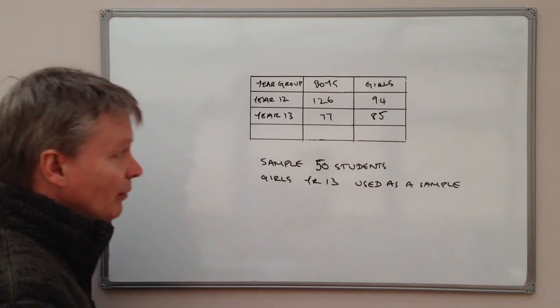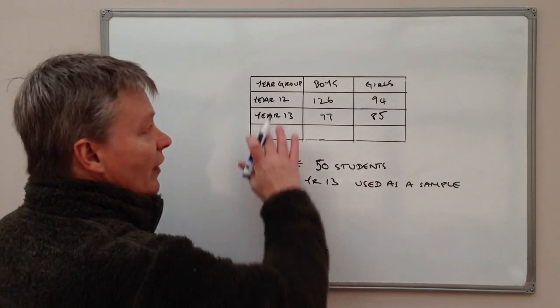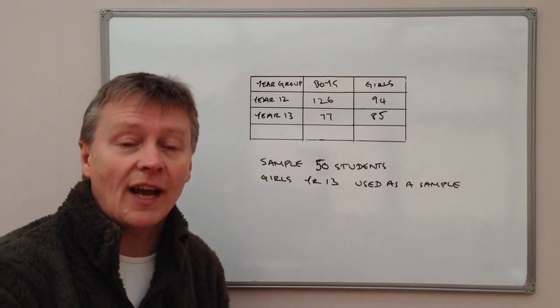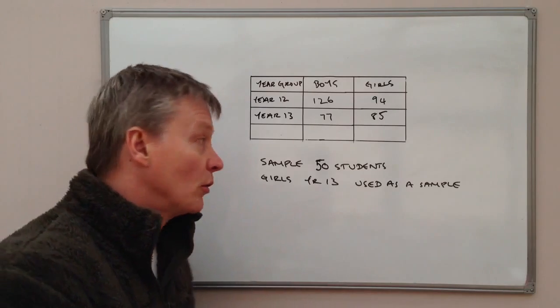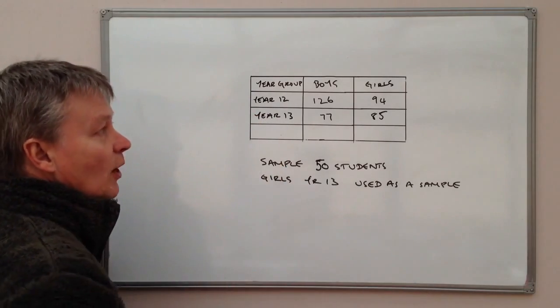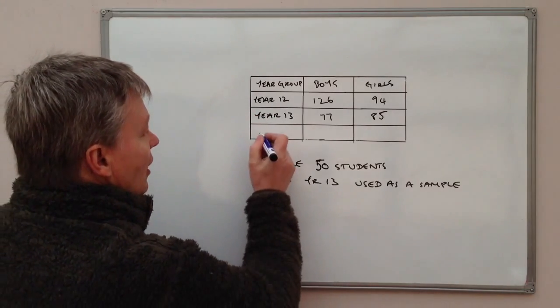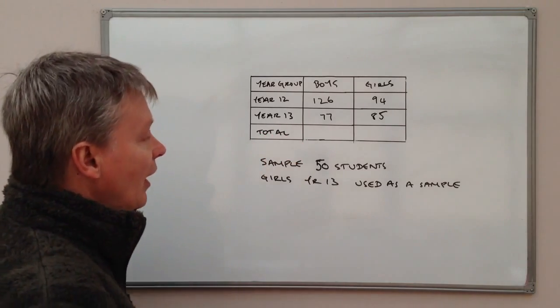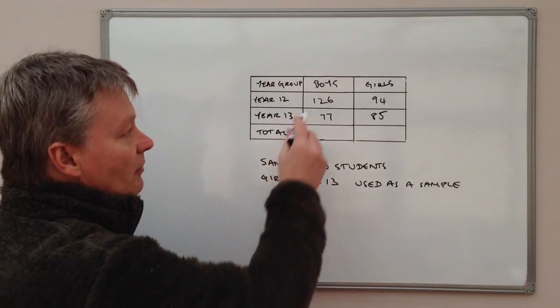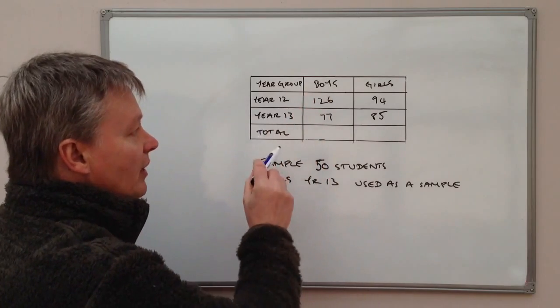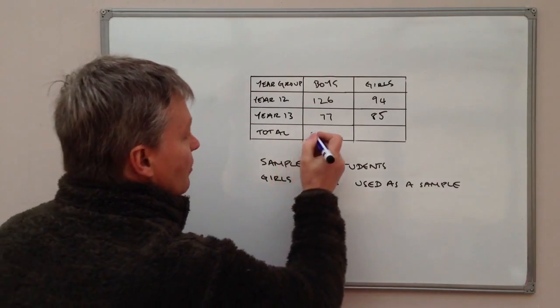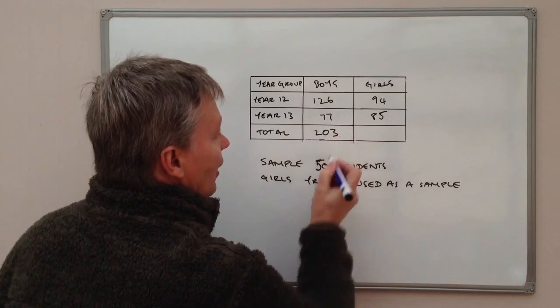And the most important bit of information that we've got within this that's missing is the totals, because we need to know how many people there are altogether in years 12 and 13. So I'm going to put a little total column there or row and I'm going to add the number of boys in year 12 and year 13 and that's going to be 203.